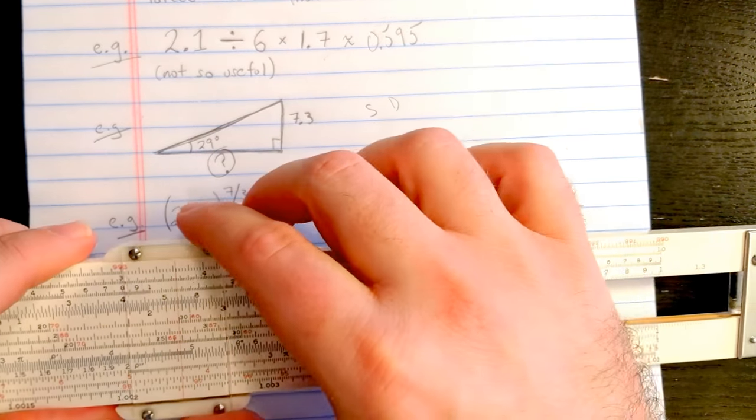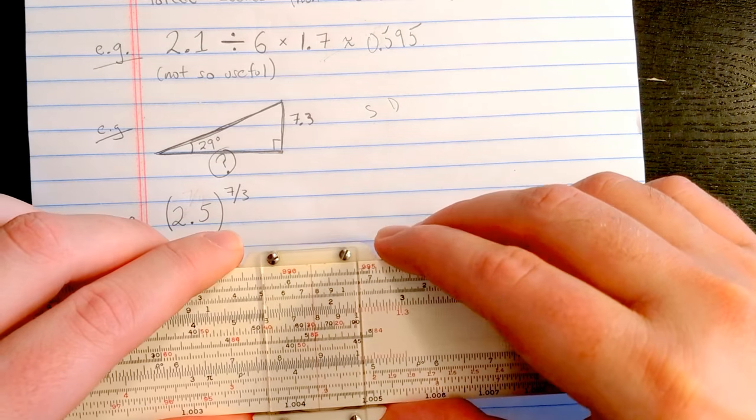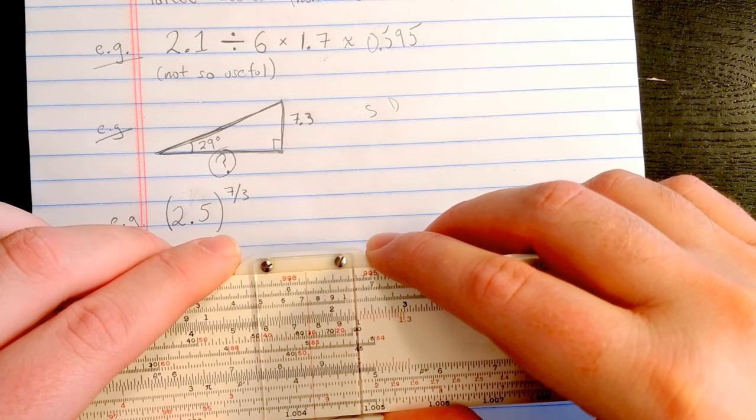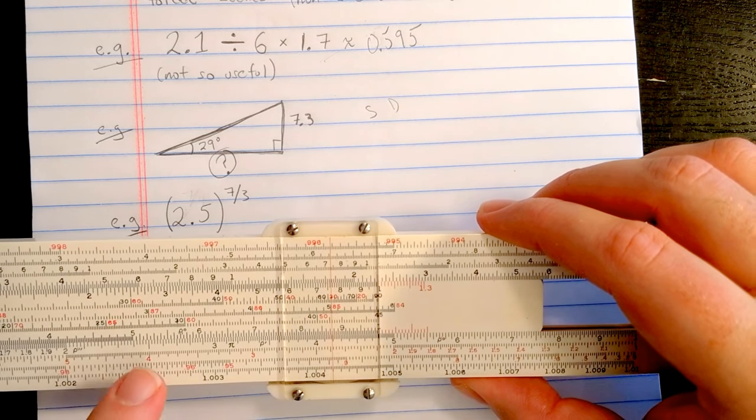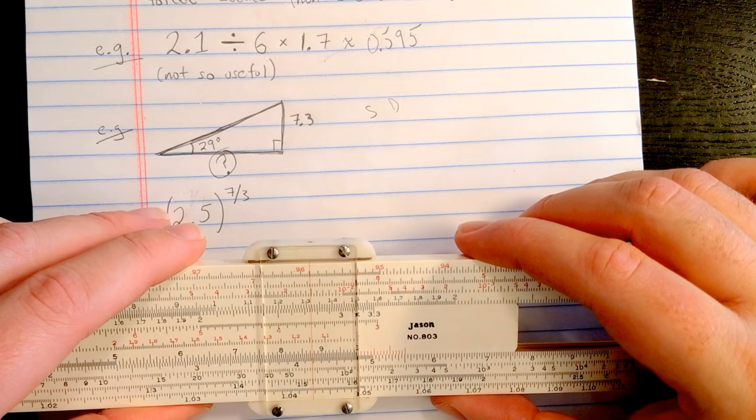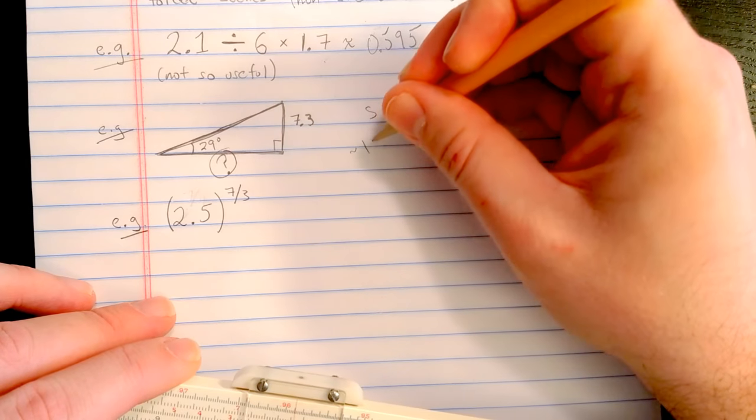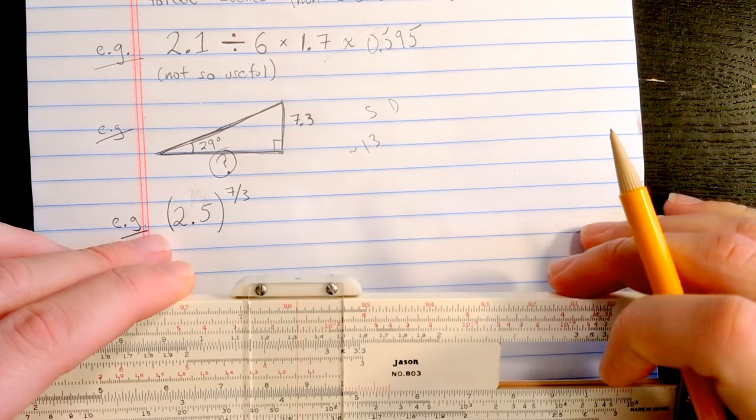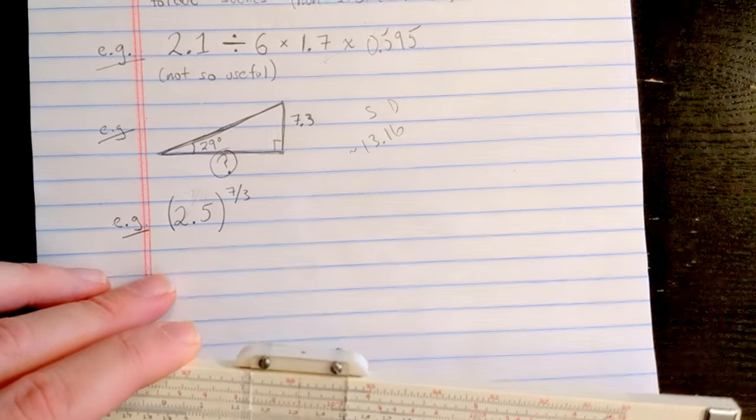Then I'll move the cursor to the 61, which is now on scale right here. But I'm not using S and D. I'm using S and DF. So I'll flip. Read result on DF. 13.06 about. Sorry, 13.16. We better check that on the calculator.